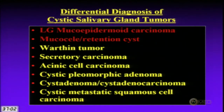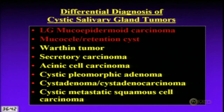A few words about cystic salivary gland lesions: a variety of tumors can be cystic, including mucoepidermoid carcinoma, retention cysts, Warthin tumor, secretory carcinoma, some acinic cell carcinomas, pleomorphic adenoma, cystadenoma, cystadenocarcinoma, and certain metastatic tumors to intra- and periparotid lymph nodes.